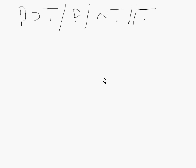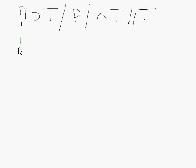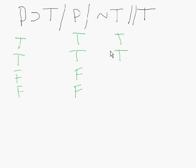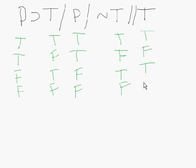Again, I have four rows — 2 to the 2nd power equals 4. So for P: true, true, false, false; and for T: true, false, true, false. That gives me the same alternating pattern across both variables.